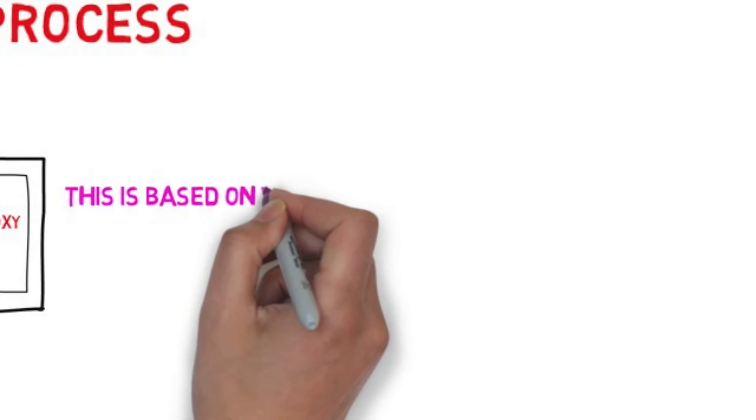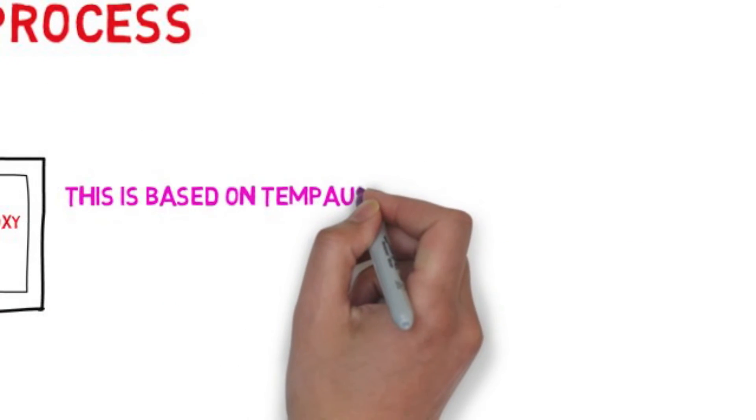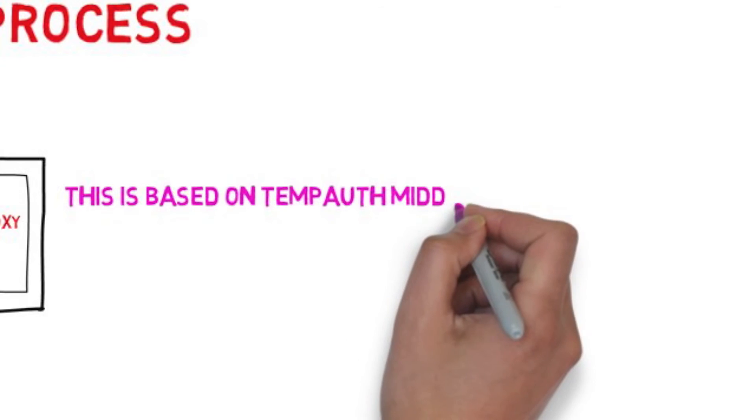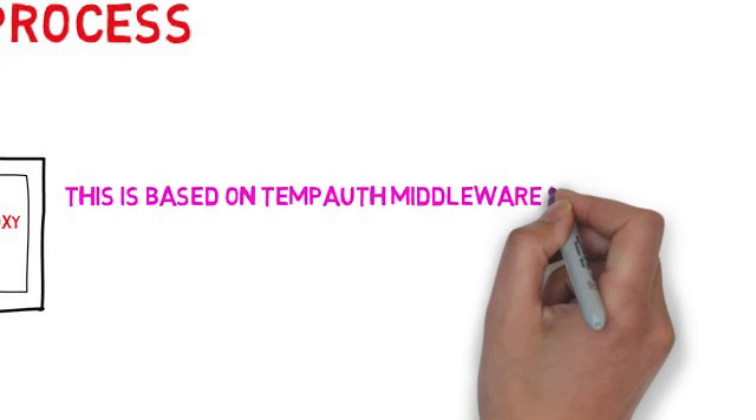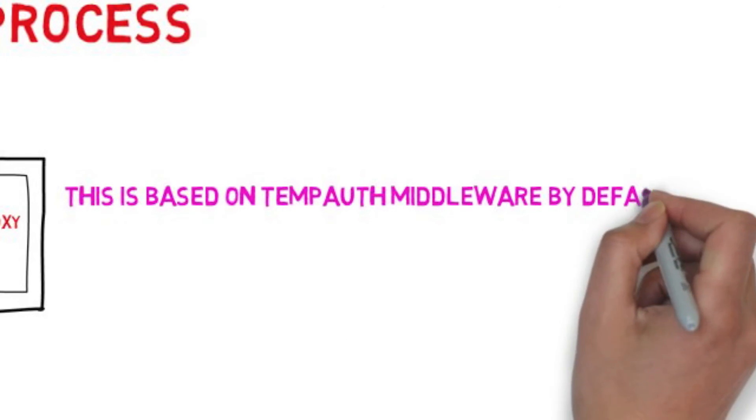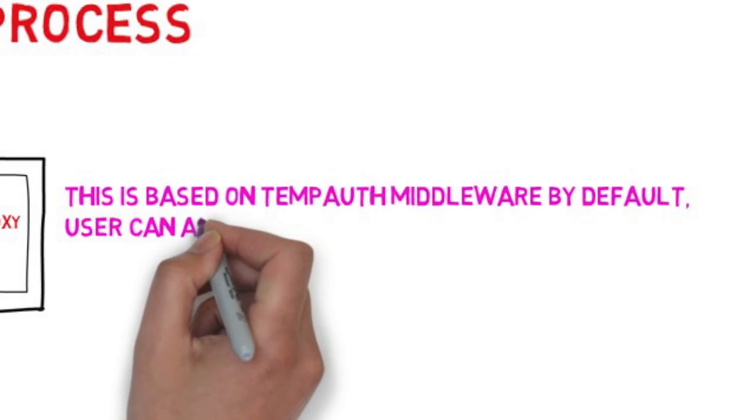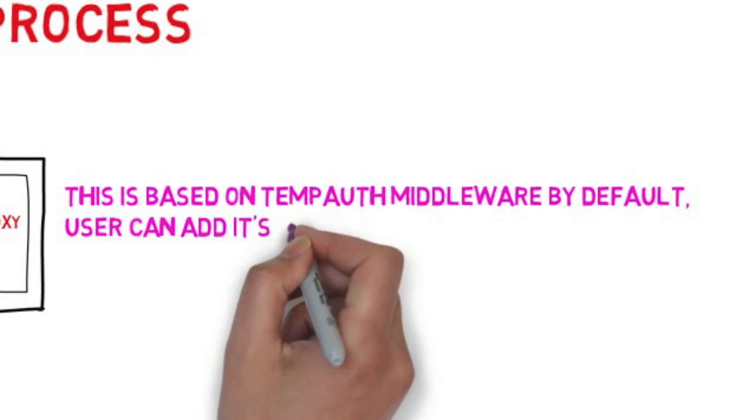This auth system is the default and is known as TempAuth. Swift middleware allows you to write your own auth system based on the use case.